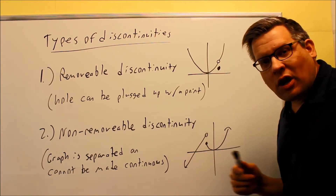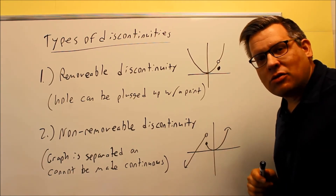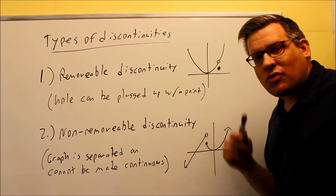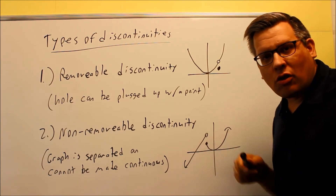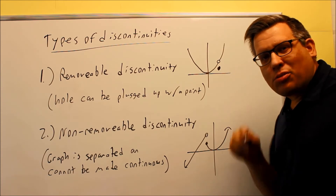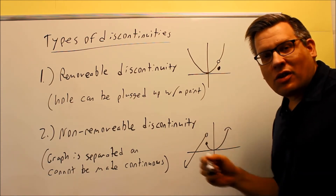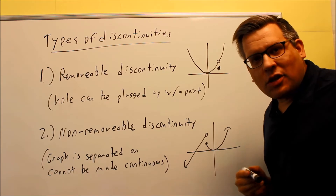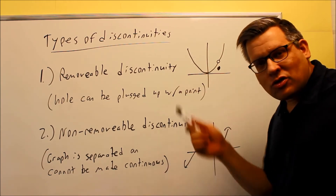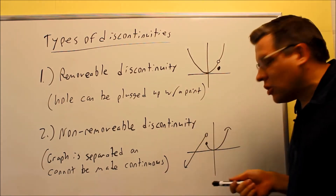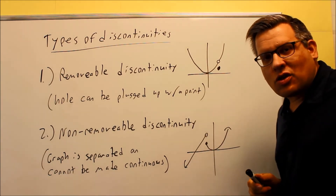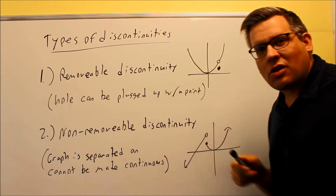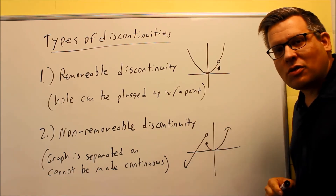Other types of graphs that have non-removable discontinuities are ones with a vertical asymptote. If there's a vertical asymptote, you can't plug in a hole — you could assign something to make the graph defined at that point, but it wouldn't be continuous because the graph is still going up and going down. There's nothing you can do, so again, non-removable means there's nothing you can do to make the graph continuous.